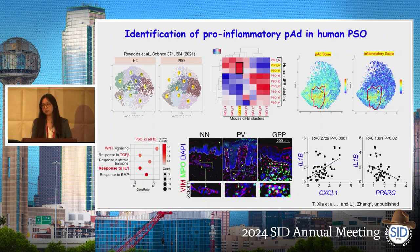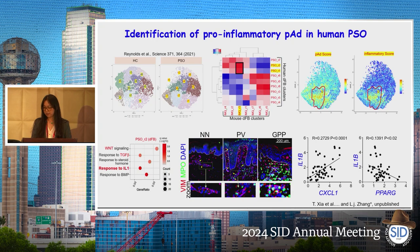To determine the human relevance of our mouse study, we analyzed a published psoriasis single-cell RNA-seq database. We identified a class of human pro-inflammatory preadipocytes highly similar to the mouse pro-inflammatory preadipocytes we identified. This population is also enriched with signaling related to IL-1 and enriched with adipogenesis inhibitors, including WNT and TGF-β signaling. Finally, we found that the lipogenic signature of fibroblasts in psoriasis is negatively associated with neutrophilic inflammation, especially in GPP.